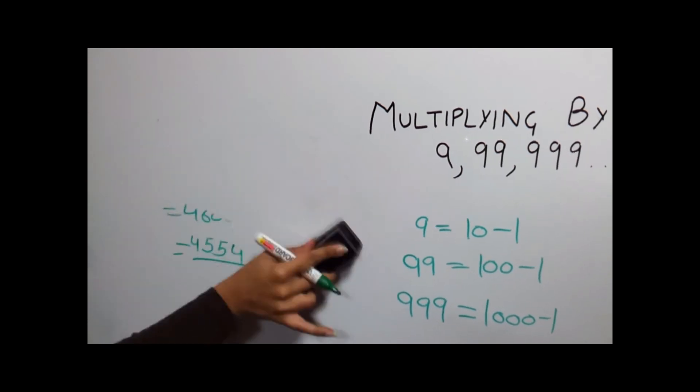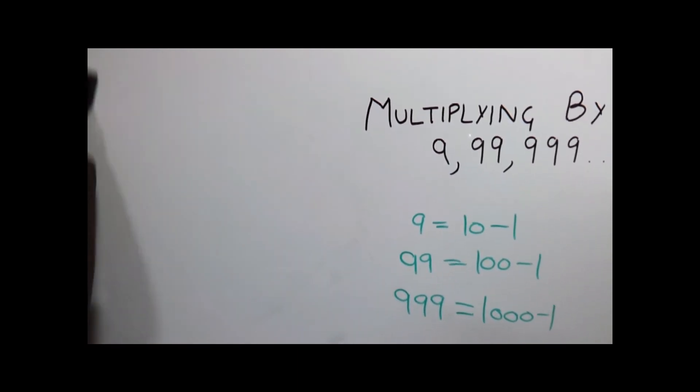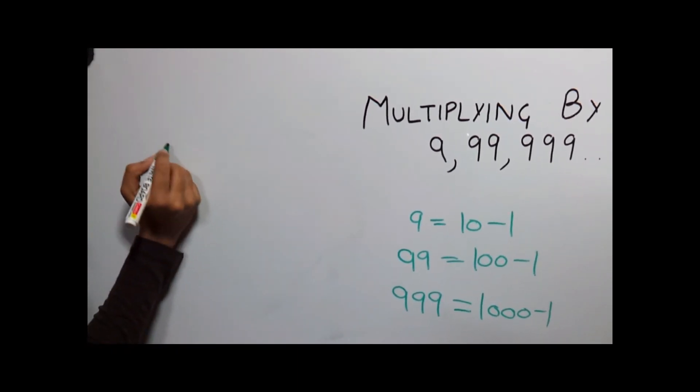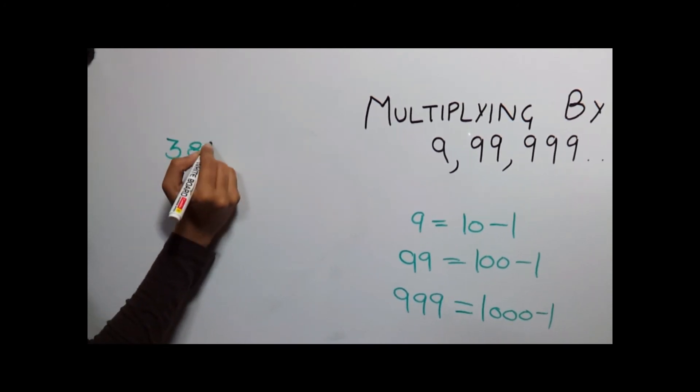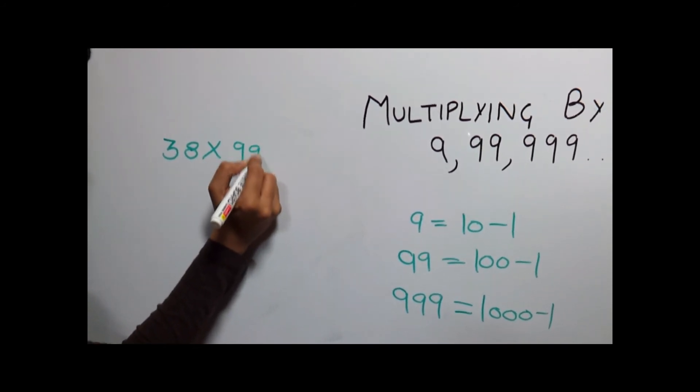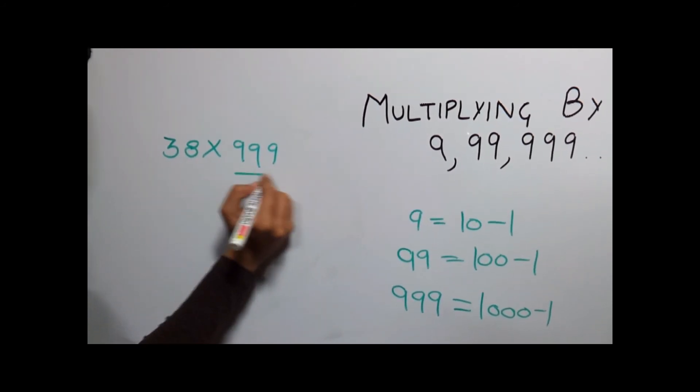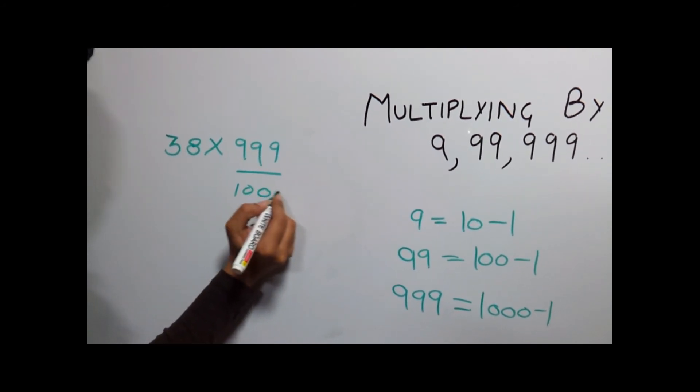Let's take another example. Let's multiply 38 with triple 9. Now here the base would be 1000.